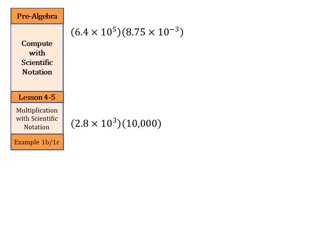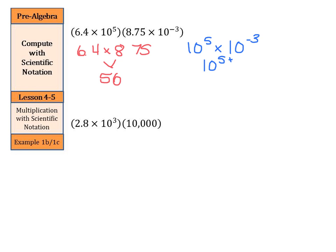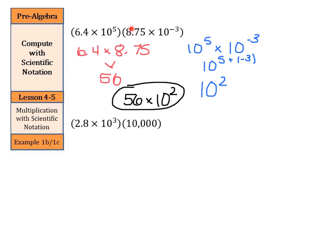Let's continue with two more examples of multiplying with scientific notation. We rewrite 6.4 times 8.75, which equals 56. Then we have 10 to the 5th times 10 to the negative 3rd, which is 10 to the 5 plus negative 3, which is simply 10 to the 2nd. So our final answer is 56 times 10 to the 2nd. Multiply the numbers in front, then handle the powers of 10 separately, and combine at the end.